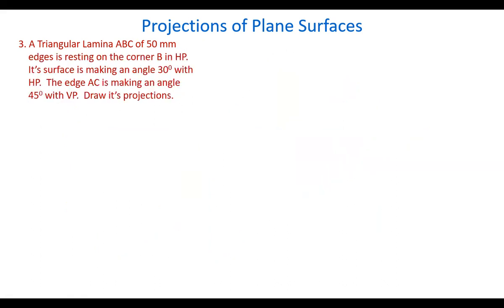Next, let's take another problem: a triangular lamina ABC resting on corner B in HP. The surface is making 30 degrees with HP, and edge AC is making 45 degrees with VP — AC is not in HP but is parallel to HP. Let's see how to draw this.